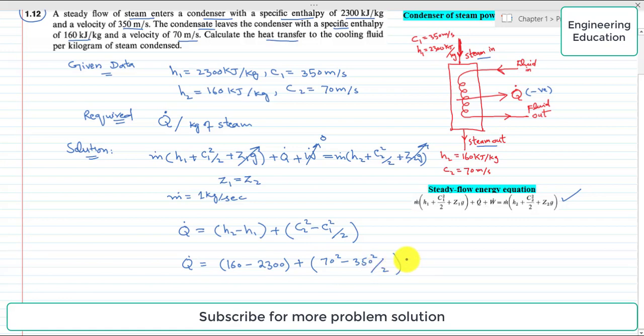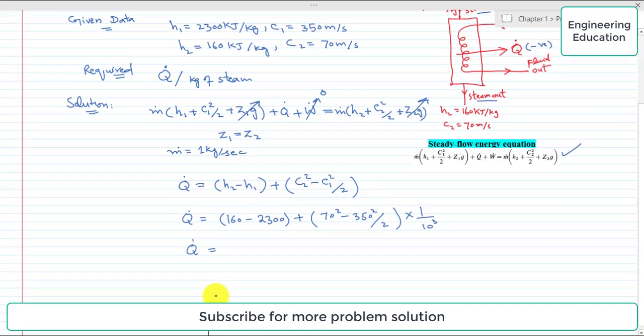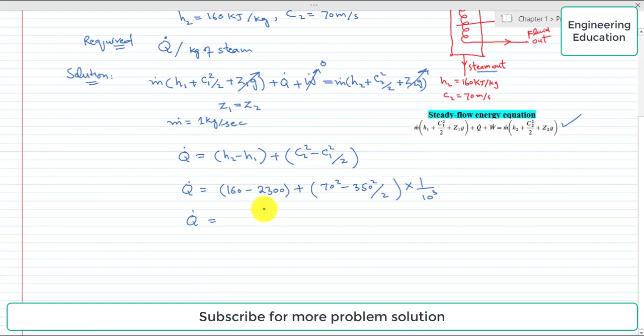Simplifying this, and also this term will be converted to kilojoules, so we will divide this term by 1000.